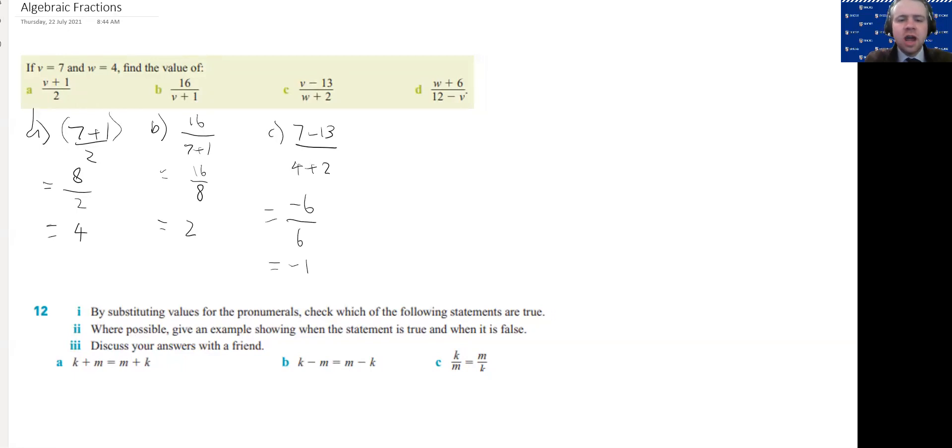So this just becomes negative 1. And then for d, w is 4 plus 6 all over, make sure that line goes all the way across, 12 minus 7 so we end up with 10 on top, 5 on the bottom, 10 divided by 5 is 2. Just remember your order of operations when you're doing algebraic fractions and you're substituting when you're evaluating.